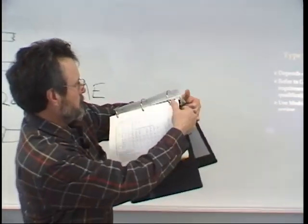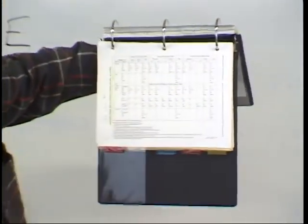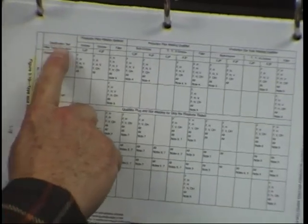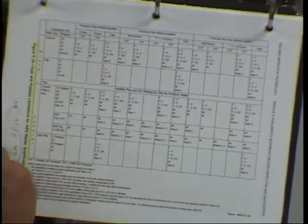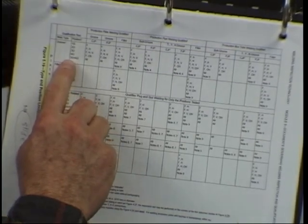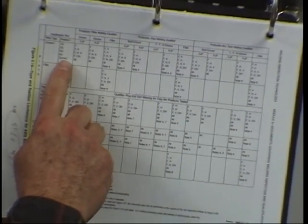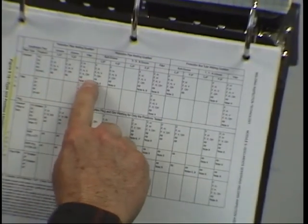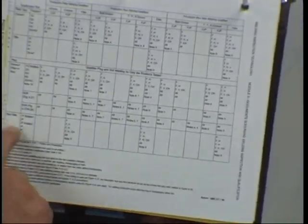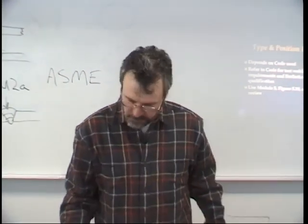This slide shows position qualifications for the D1.1 code with groove welds and plate welds. The positions are 1G, 2G, 3G, 4G, and 3G+4G combined. If a person under AWS D1.1 does a groove weld plate test in the 3G and 4G positions, that qualifies them to weld complete joint penetration welds in all positions. Down below they have pipe fillets; D1.1 doesn't deal with pressure piping but does deal with K, T, and Y tubular configurations.